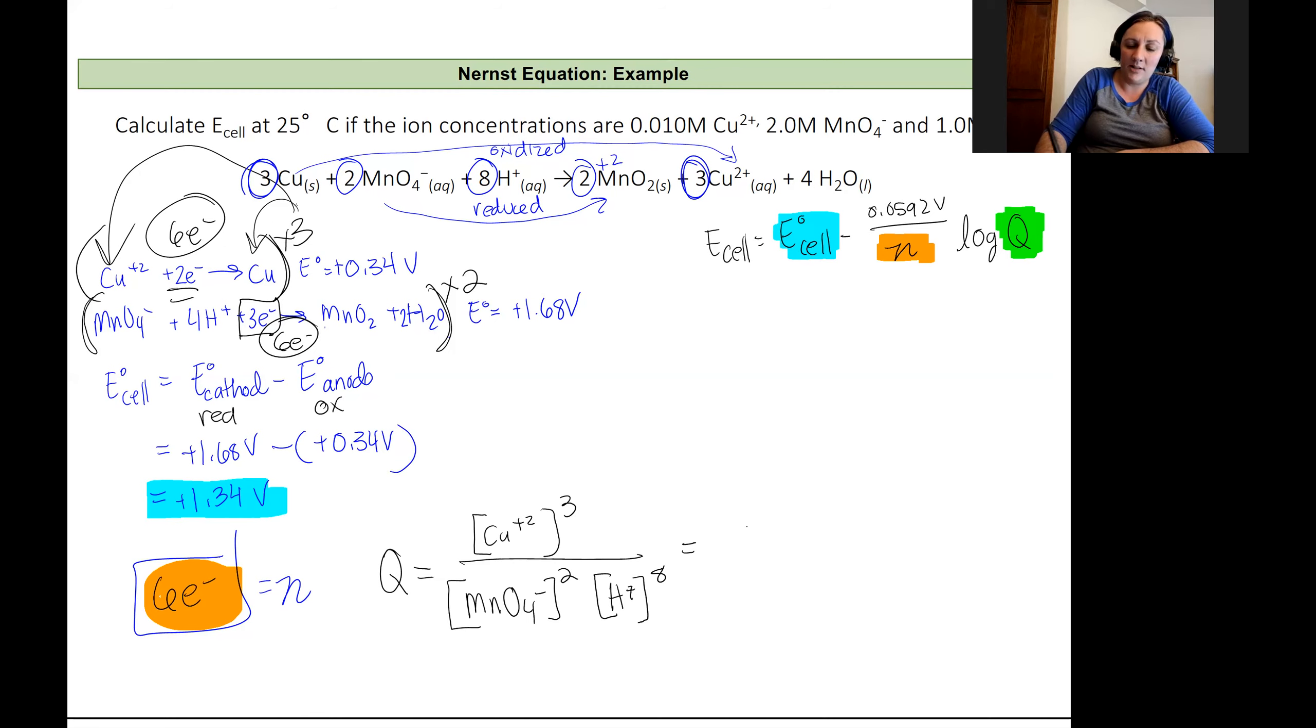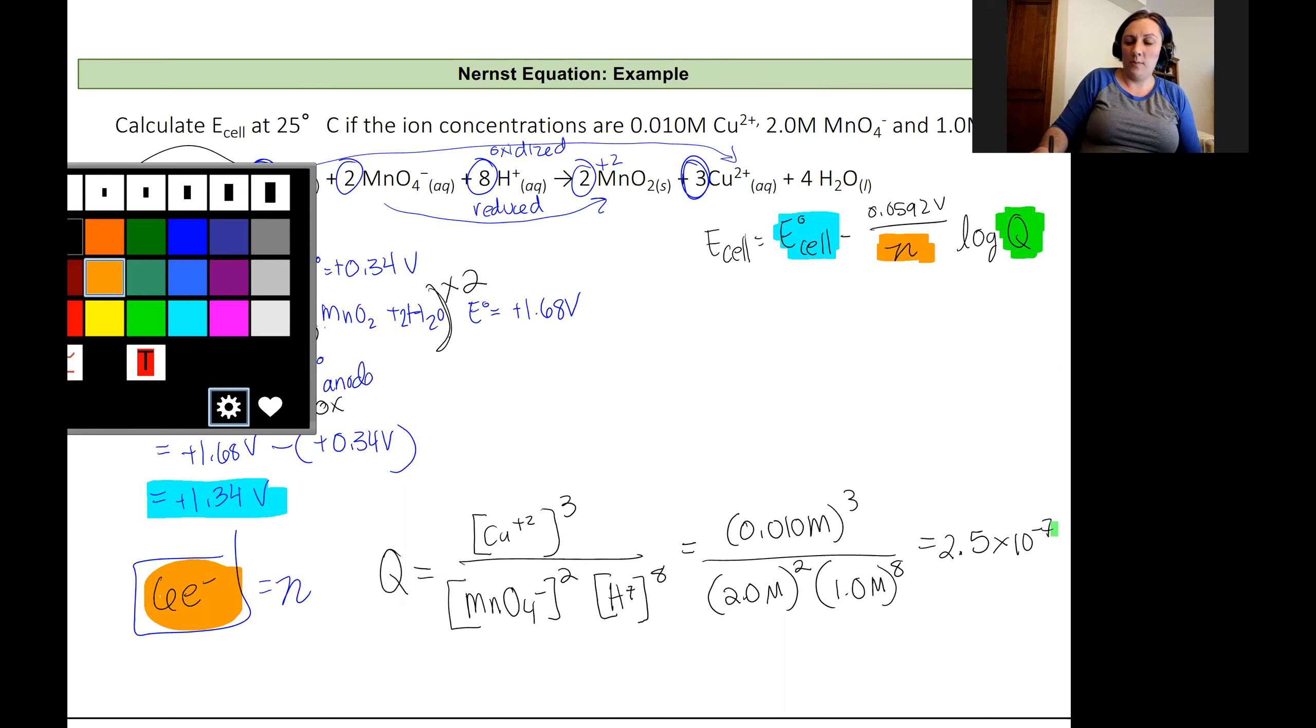Now I'm going to plug those values into my Q expression using the concentrations given for my solution. Since these aren't added together, these are just the total concentrations in the solution. So that copper is at a concentration of 0.01 molar cubed, divided by this 2.0 molar manganese oxide squared and 1.0 molar H plus to the power of eight. If I plug this all into my calculator, lucky for the one that's to the power of eight, it's just one. I get a value of 2.5 times 10 to the negative seven. That I can plug in for my value of Q.